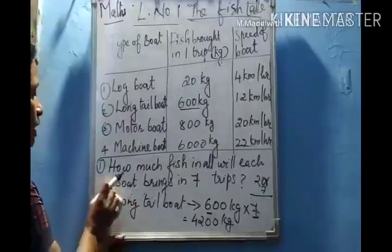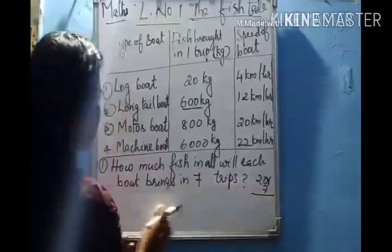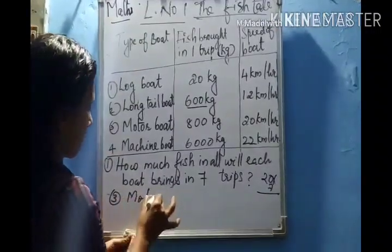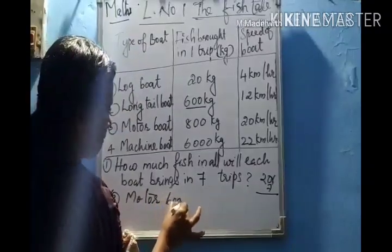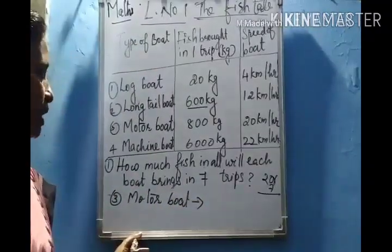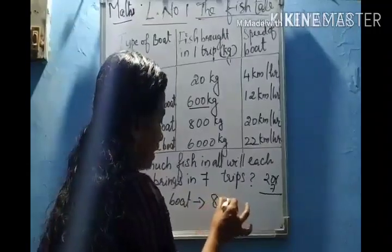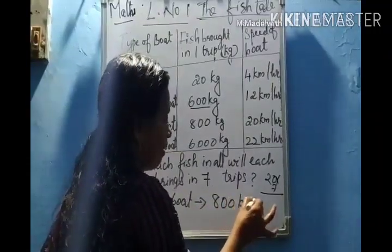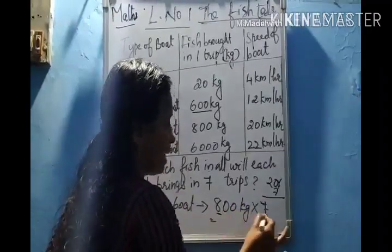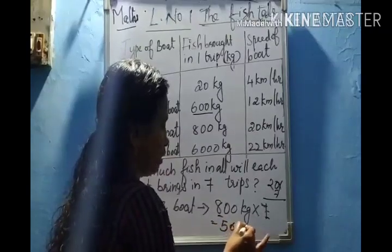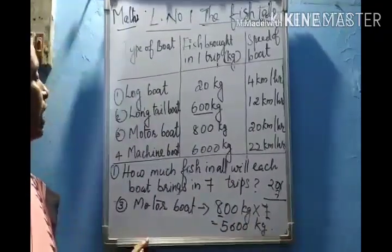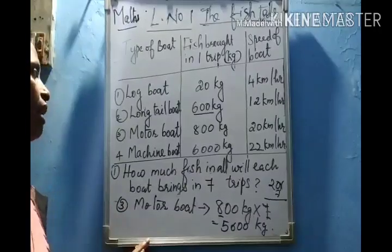Next we move to the motor boat. How much fish is brought by the motor boat in one trip? Eight hundred kilograms. So eight hundred kilograms we will multiply by seven. Eight sevens are fifty-six, and we add the two zeroes. So five thousand six hundred kilograms of fish will be brought in seven trips by the motor boat.